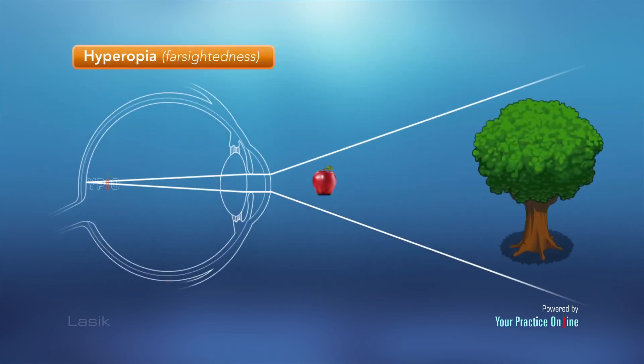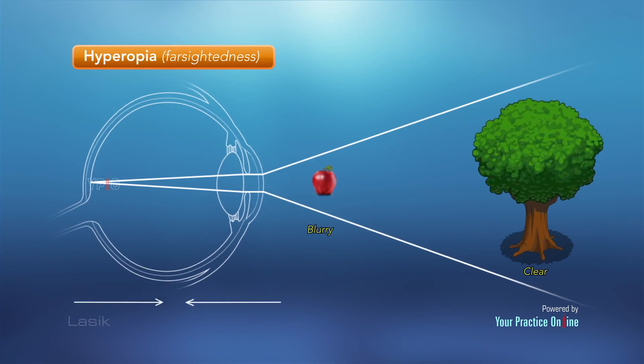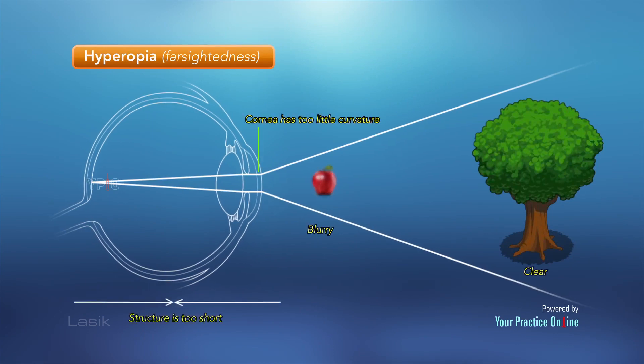Farsightedness is an eye condition in which distant objects can be seen more clearly than objects that are near. This is caused by an eyeball that is too short or a cornea that has too little curvature.